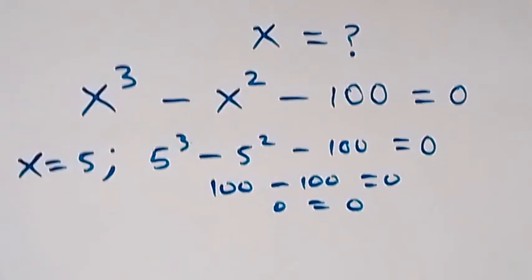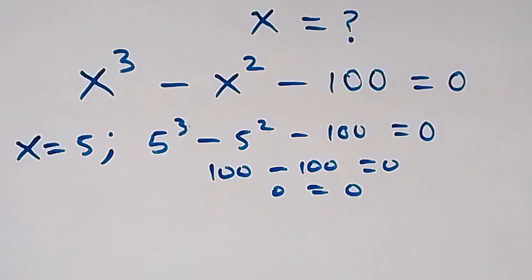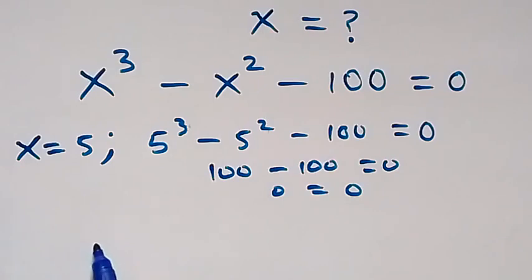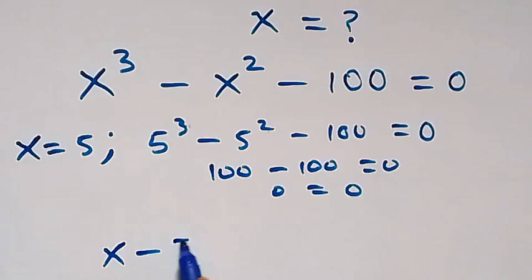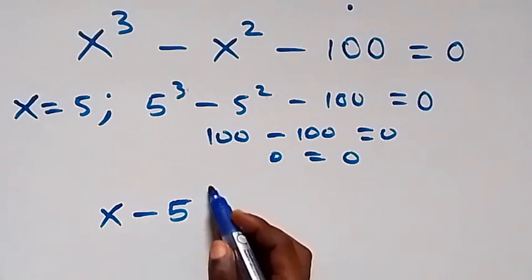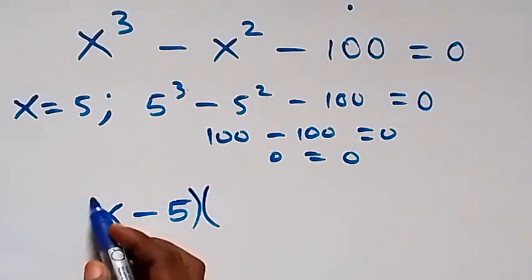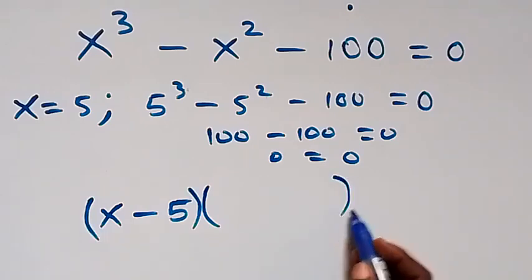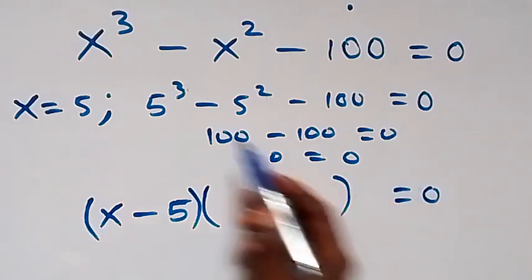Since we have x equals 5 as one of the roots, it implies that x minus 5 is a factor. Then we need to get the other factor, which should be a quadratic factor of this polynomial.